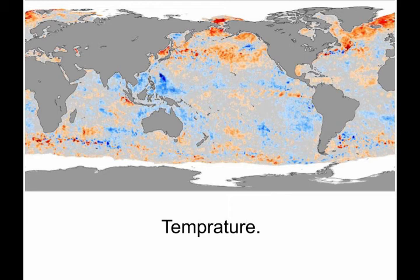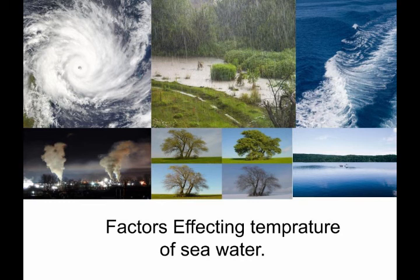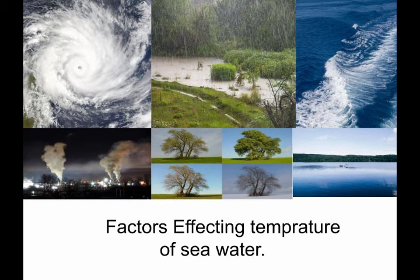Besides latitude and depth, some other factors also affect the temperature of seawater: cyclones, rainfall, sea waves, ocean currents, salinity, pollution, convectional currents, and seasons. Ocean currents also have a similar effect. In regions where cold ocean currents flow, the surface temperature of seawater is lower. In regions where warm ocean currents move, the temperature increases.